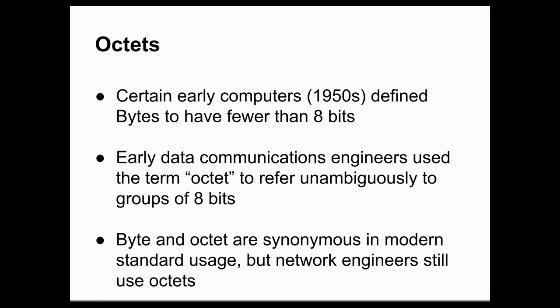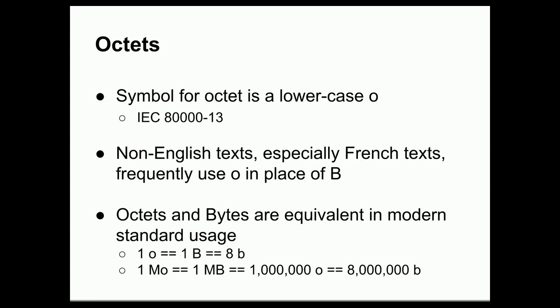There is another term that we see in networking, and this term originated from the fact that certain early computers in the 1950s defined bytes to have fewer than 8 bits. Thus, early data communications engineers used the term octet to refer unambiguously to groups of 8 bits. In modern standard usage, the word byte and the word octet mean exactly the same thing, but network engineers typically use the term octet, and you'll see octet written in many networking texts and documents. The symbol for octet is a lowercase o following the IEC 80000-13 standard.